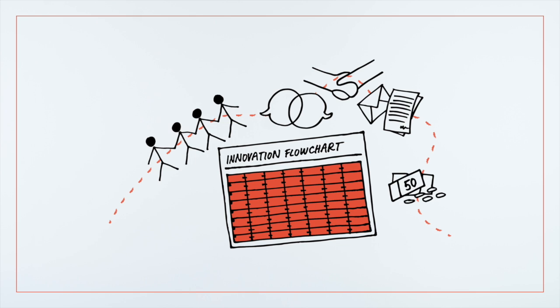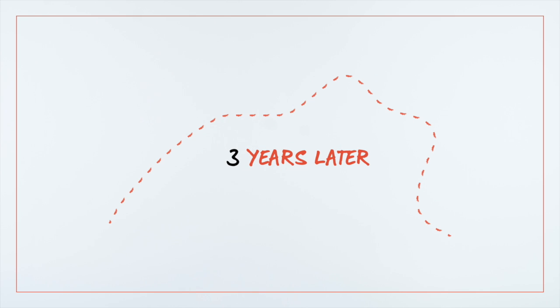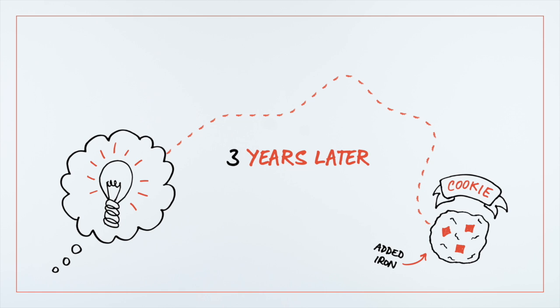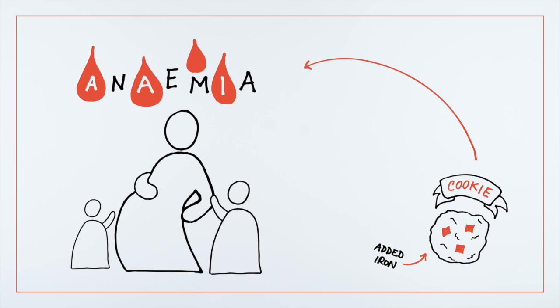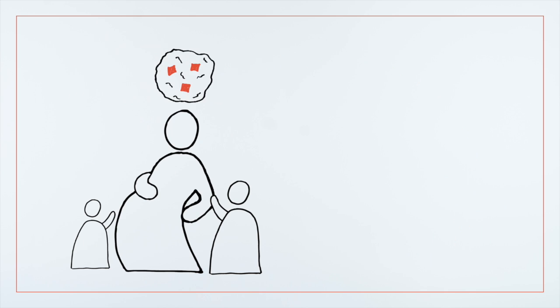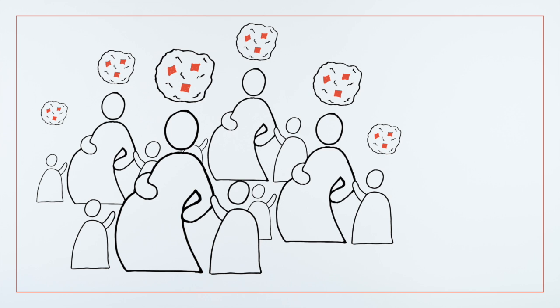After a couple of years, Jennifer and Matthew's idea has grown into a fortified cookie to improve iron and nutritional intake for pregnant women. The cookie has significantly improved the health of women and their children. It has been adopted widely, and using the innovation flowchart, Jennifer and Matthew have been able to plan the different elements needed to introduce the initiative to other countries.